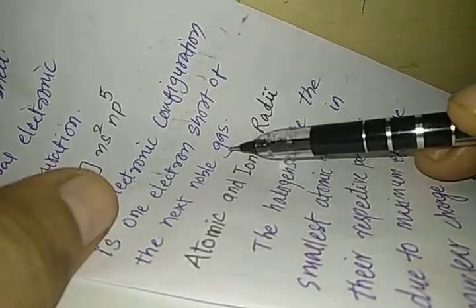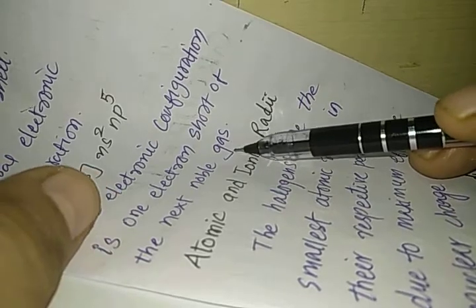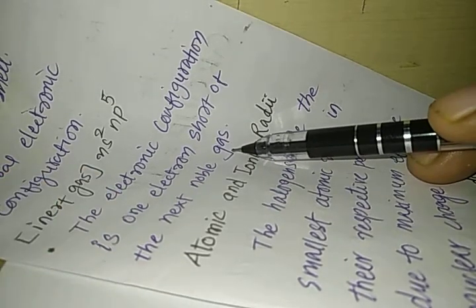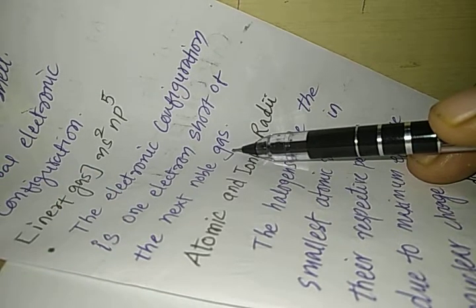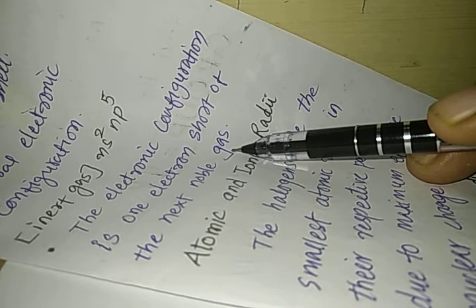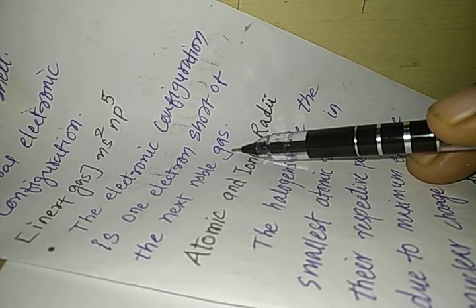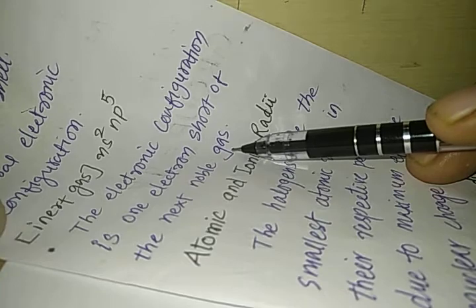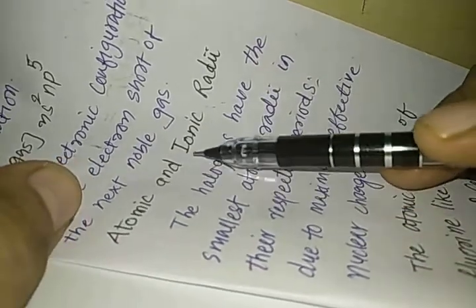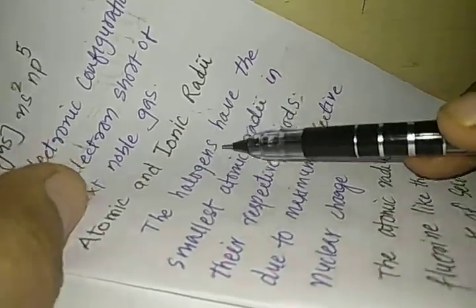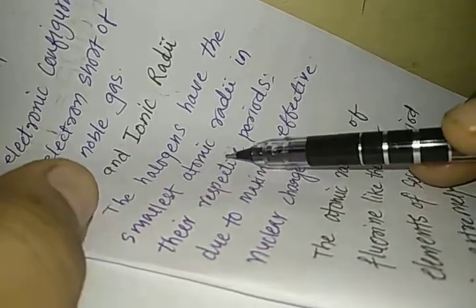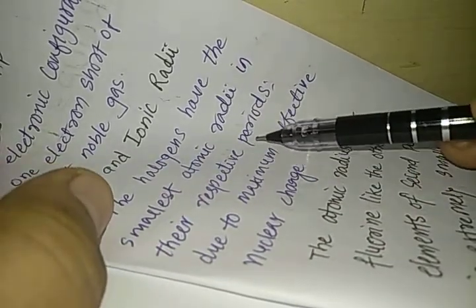This is a very important point about its electronic configuration, and that is why they are highly electronegative as well as they have very high negative electron gain enthalpy. Atomic and ionic radii: the halogens have the smallest atomic radii in their respective periods.